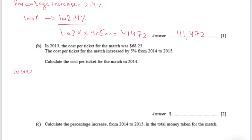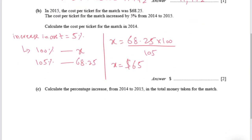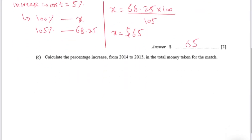The increase in cost was 5%. So in 2014, if it was at 100%, we need to find the value of the ticket in 2014. It was at 105% and the ticket price was $68.25. In order to find x, we need to cross multiply — 68.25 times 100, then divide by 105. We get $65, which is the cost of the ticket in 2014.